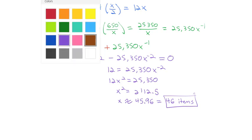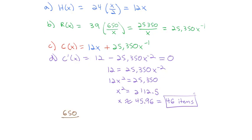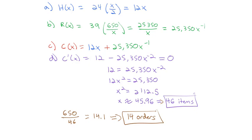We need to order 46 items at a time. For the number of orders: 650 total divided by 46 items gives 14.1, so we round to 14 orders. If we do 14 orders of 46 items per order, we'll minimize our total inventory cost. Just like optimization, we build our function, take the derivative, and set the derivative equal to zero.